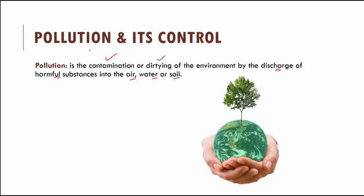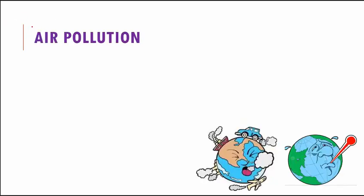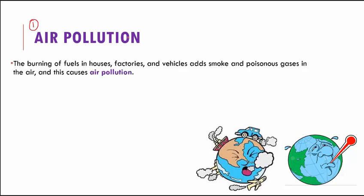Pollution is divided into three types: air pollution, water pollution, and land pollution. We will take each one by one and study them in detail. Starting with air pollution — burning of fuels in our houses, factories, and vehicles adds smoke and poisonous gases to the air that we breathe, and this causes air pollution.